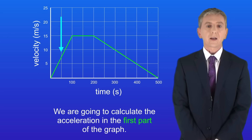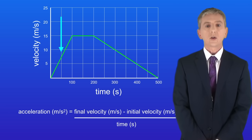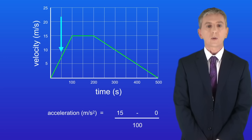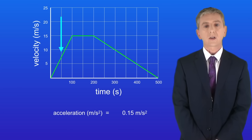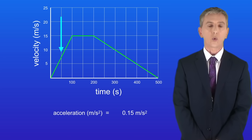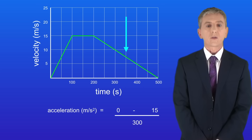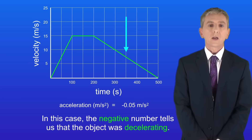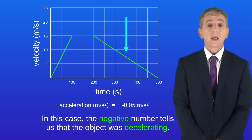To calculate the acceleration in the first part of the graph, we subtract the initial velocity from the final velocity and divide by the time. The final velocity is 15 meters per second, the initial velocity was 0, and the time is 100 seconds, giving an acceleration of 0.15 meters per second squared. For the last part of the graph, the final velocity is 0, the initial velocity was 15 meters per second, and the time was 300 seconds, giving an acceleration of minus 0.05 meters per second squared. The negative number tells us the object was decelerating.